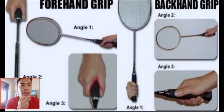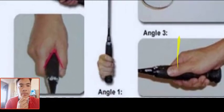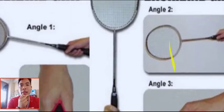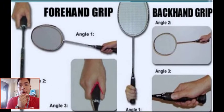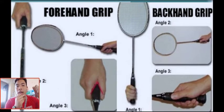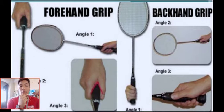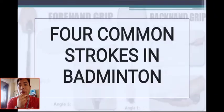In the forehand grip, the hand grips the entire handle of the racket. In the backhand grip, the hand position is different — as seen in the picture, there is a big difference between the two. Use whichever grip you are most comfortable with, as both are precautionary measures for playing badminton.